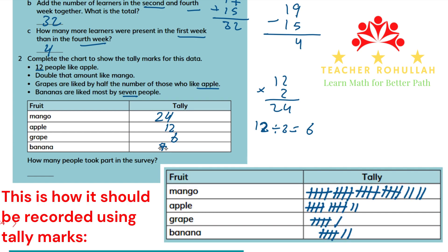Now it asks how many people took part in the survey. We have to find the total. We have 24 plus 6 is 30, 30 plus 12 is 42, and 42 plus 7 is 49. So the number of people who took part in this survey is 49.